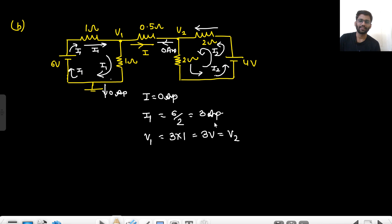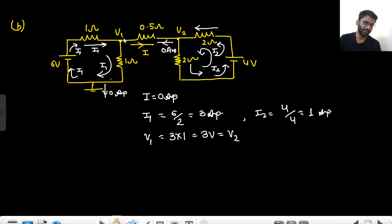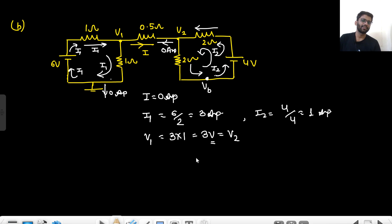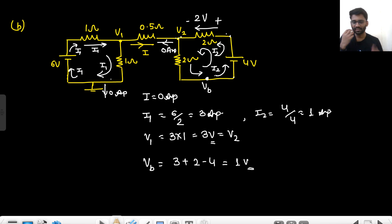So V1 and V2 are equal to 3V. What is the potential of the point VB? Because of the 1A current, there is a voltage drop of 2V. So if this is 3V: 3 plus 2 minus 4 equals 1. So VB equals 3 plus 2 minus 4, which equals 1V. This node is 0V (ground), and the other node is 1V. That completes the analysis for the second circuit.